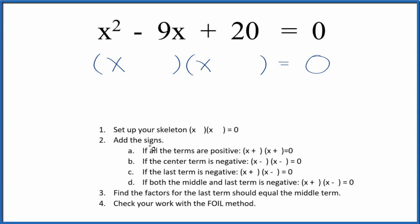Next, we have to add the signs. So we have this negative on the middle term. If the center term, the middle term is negative, we're going to put two negatives here in our skeleton, like that.